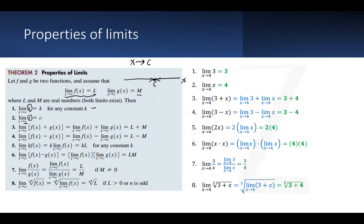Looking at the third property: the limit of a sum of two functions is actually equal to the sum of both limits. So we can take the limit of f, take the limit of g, and this becomes l plus m, which is very intuitive. We're just applying the limit operator to both functions. This also applies to property four, the difference.